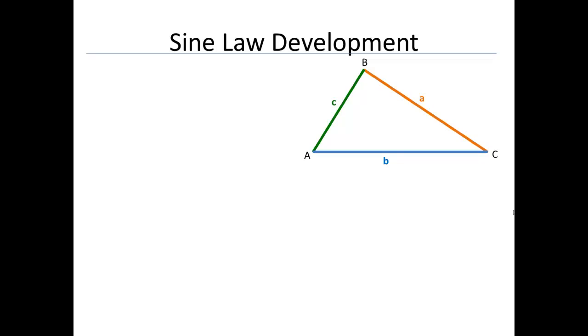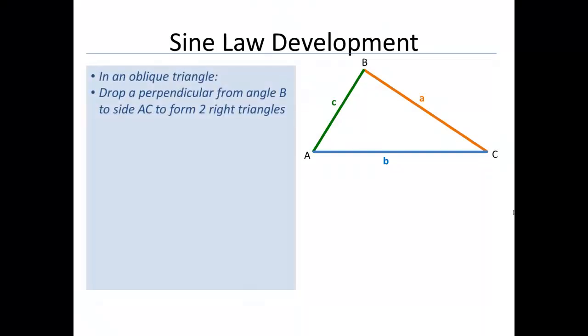So I'm going to do one example of getting some of the ratios from our sine law. So what we're going to do is we're going to drop a perpendicular from angle B to side AC, or side little b, in my triangle.